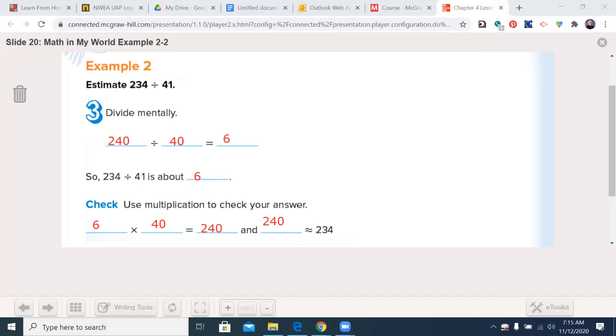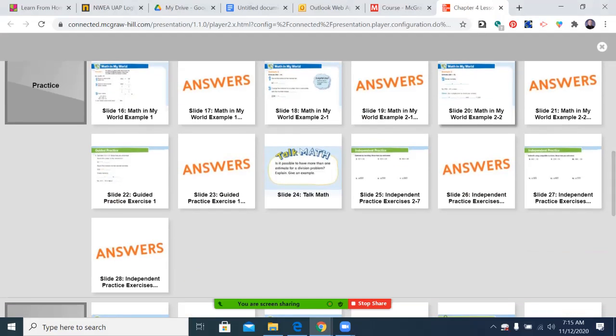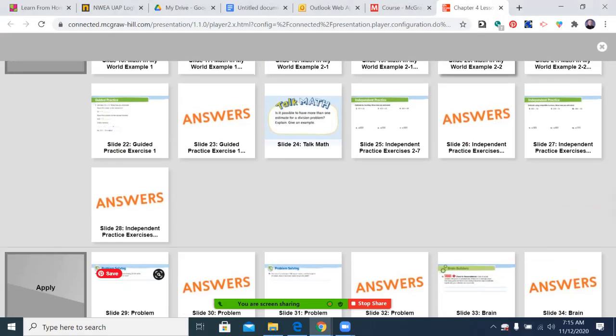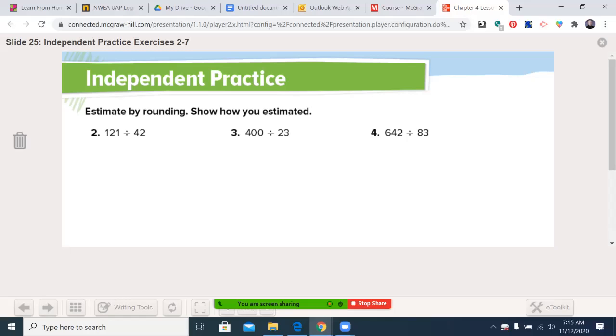This point, we're going to ask you to do some independent practice. I'll bring it up here on the slide. I would like you to do numbers two, three, and four at the top of 253. In each case, write out what you estimated. So tell me what you turned 121 into and what you turned 42 into. And in this case, you should use the rounding. So you should be rounding either to the nearest 10 or the nearest 100. You may pause the video, complete the assignments, and remember to unpause the video, come back and let's see how you did.